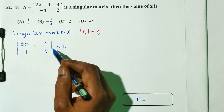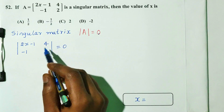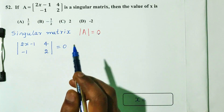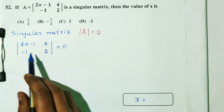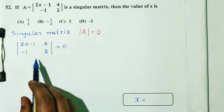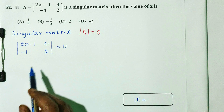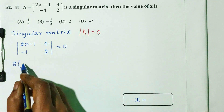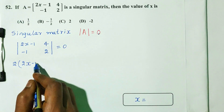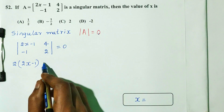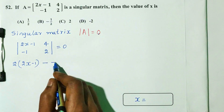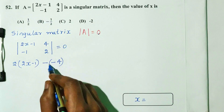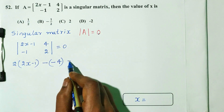So the determinant of the matrix: 2x minus 1, 4, minus 1, 2 is equal to 0. Applying the formula: principal diagonal 2 into (2x minus 1), minus the remaining elements: plus into minus, so minus 4 into 1 equals 4, which is equal to 0.